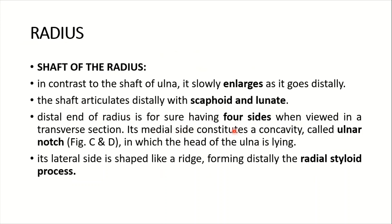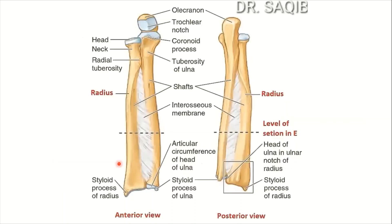The distal end of the radius has four sides when viewed in a transverse section. Its medial side constitutes a concavity called the ulnar notch, in which the head of the ulna lies distally. Its lateral side is shaped like a ridge, forming distally the radial styloid process. Note that the styloid process of the radius projects more distally than the styloid process of the ulna — this holds clinical significance.